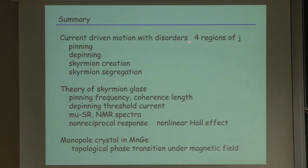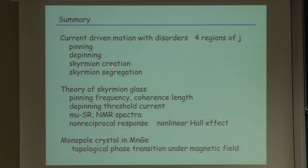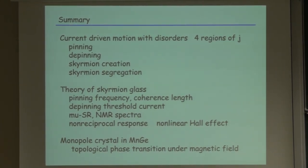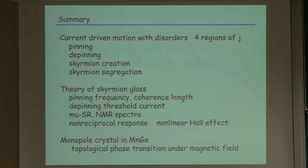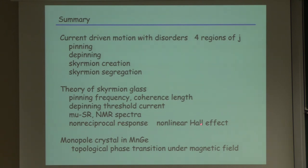In summary: under strong disorder and current, we have four regimes — pinning, depinning, skyrmion creation, and skyrmion segregation. These last two are new features coming from magnon emission and skyrmion distortion introducing singular points in the spin configuration, not captured by a particle picture. We developed a skyrmion glass theory based on replica symmetry breaking with a variety of predictions and the analysis of the nonlinear Hall effect. And in these particular materials, we discussed topological phase transitions under magnetic field. Thank you very much.